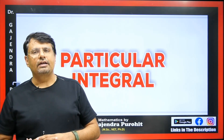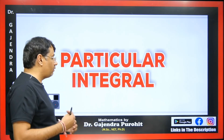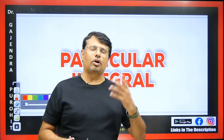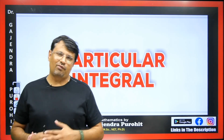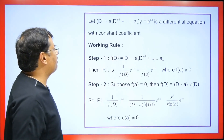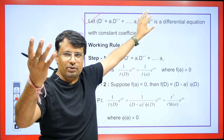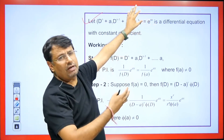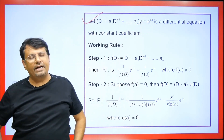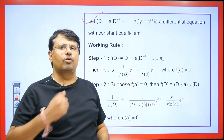Today we are going to discuss how to solve for the particular integral (PI) in a differential equation. Any differential equation has two parts: the CF (complementary function) and the particular integral. I explained CF in the last class — for real distinct roots, equal or complex roots, and irrational roots. Now we will discuss particular integrals. The right-hand side can be e^(ax), sine, cosine, a polynomial like x²+x, or e^(ax) multiplied by some function.